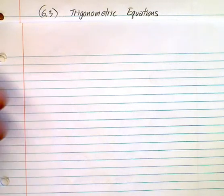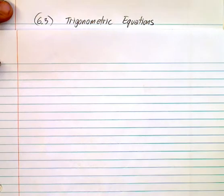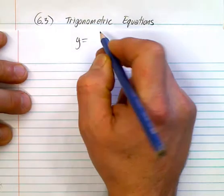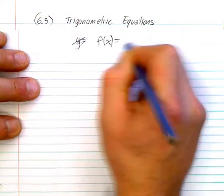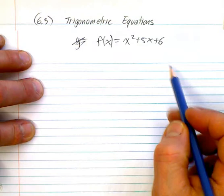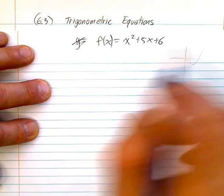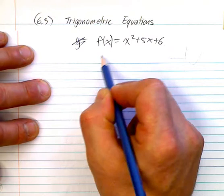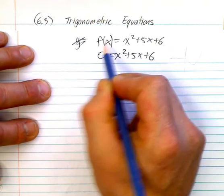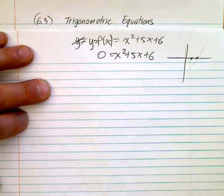We're looking at section 6.3 — trig equations. Hopefully you remember the difference between an equation and an expression. If we have a function like f(x) = x² + 5x + 6, we can graph it. Now if we're looking to solve this quadratic equation, we make the function equal to zero and look for the x-intercepts. That doesn't change at all when we're solving trig equations — we're looking for the x-intercepts when we make it equal to zero.